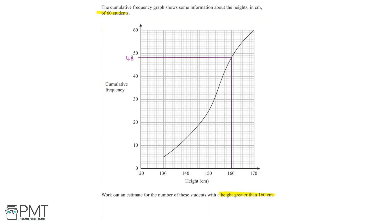Now we want to find the number of students with a height greater than 160 centimeters. Now 48 is the number of students with a height less than 160 centimeters. And since we have a total of 60 students, we can say that the number of these students with a height greater than 160 centimeters is 60 take away 48, which is equal to 12 students.